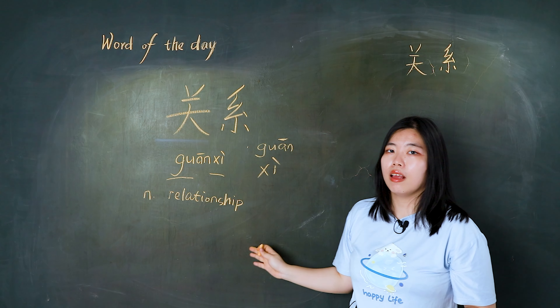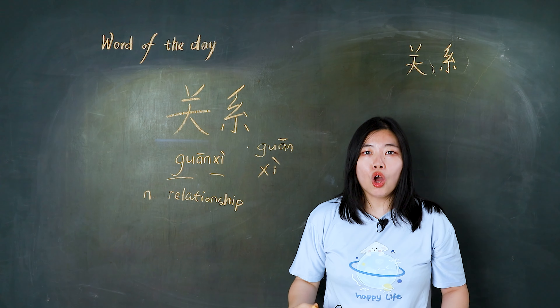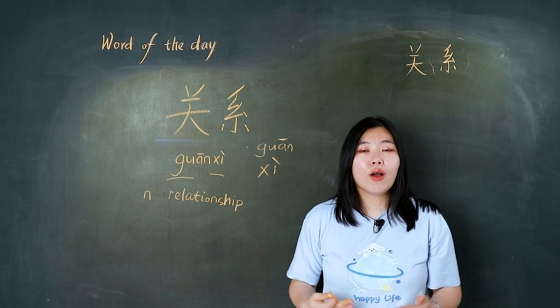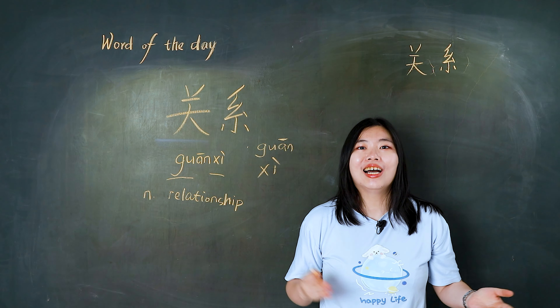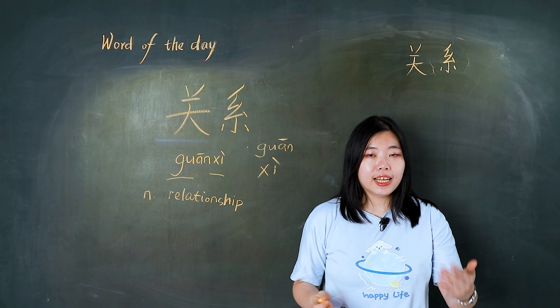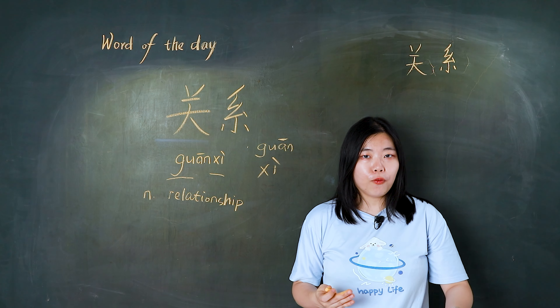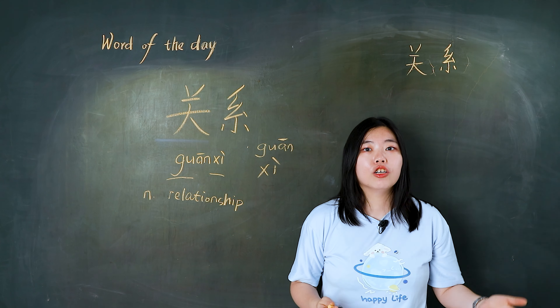关系 as a noun means relationship. 我和你的关系是老师和学生。 The relationship between us is teacher and student.